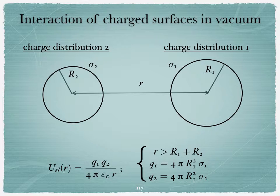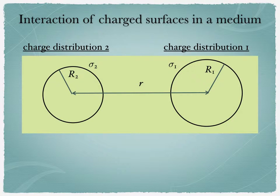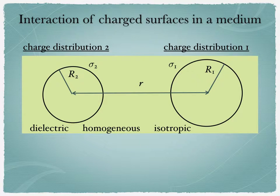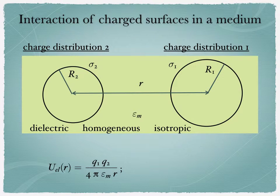Now what happens when we put these two distributions in a particular medium? If the medium is dielectric, homogeneous, and isotropic, then the whole properties of the medium can be represented by a single number epsilon m, which is the dielectric permittivity of this medium. In this particular case, the interaction between these two charge distributions is simply q1 times q2 divided by 4 pi epsilon m times r.